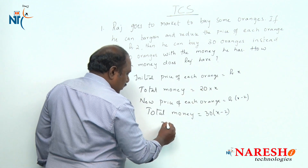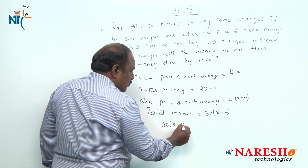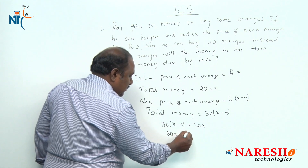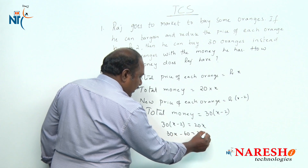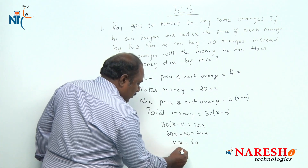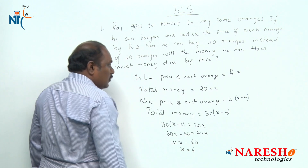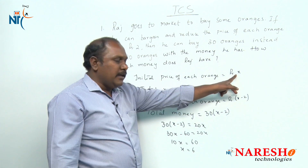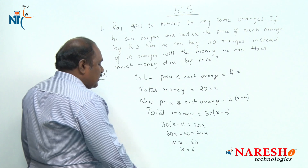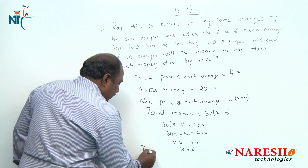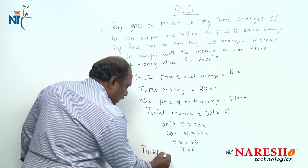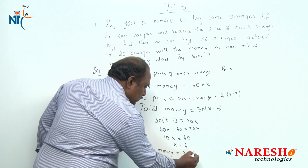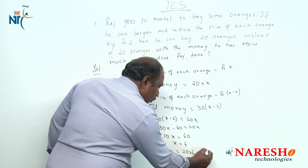Equating these two: 30 into (x minus 2) should be equal to 20x. So 30x minus 60 equals 20x, giving 10x equal to 60, or x equal to 6. That means the initial price of each orange is 6 rupees. So the total money Raj has should be equal to 20 into 6, which is 120 rupees.